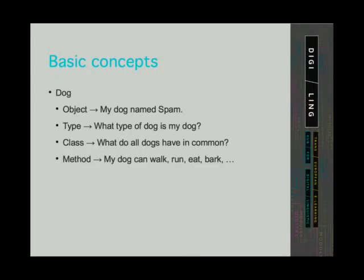Let's look at an example of these concepts — let's imagine dogs. I have a dog named Spam. My dog is a particular instance of a class, that is, it is an object. What breed my dog is defines the data type. A class of dogs represents prototypical dogs, blueprints. A class of dogs groups together all dogs and their common features — it is the dog we have in mind when someone says the word 'dog' without thinking of a specific dog. My dog Spam can walk, run, and bark. These are things my dog can do — those are the methods associated with the object.